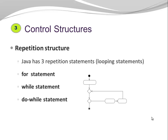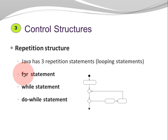The third control structure is the repetition structure. The repetition structure allows me to repeat a code segment over and over again. In Java, we have three repetition statements: the for statement, the while statement, and the do-while statement. They are also referred to as looping statements or just loops. By the way, there are two types of for loops in Java, but at this point I don't want to go into that.